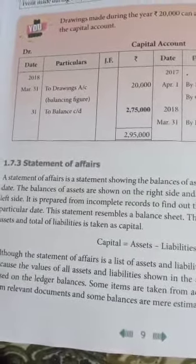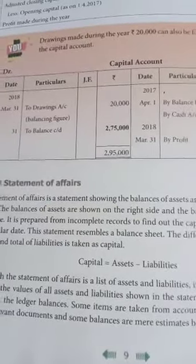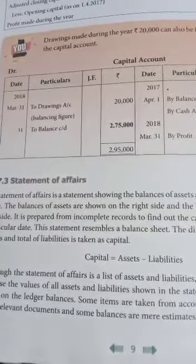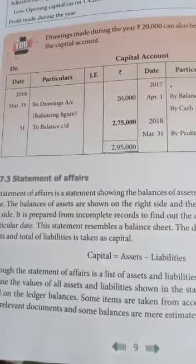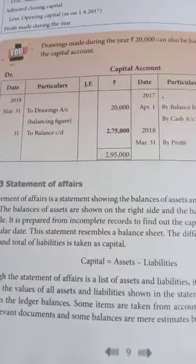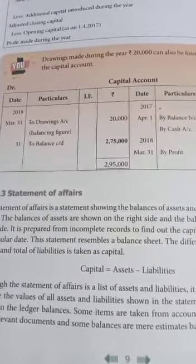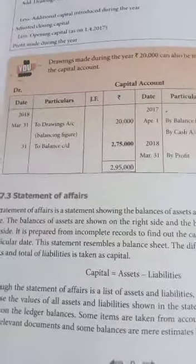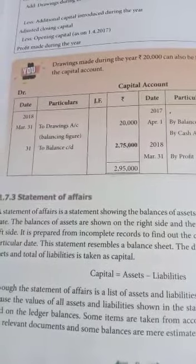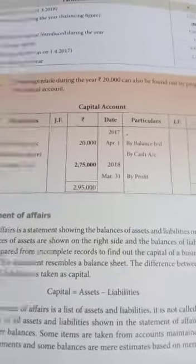Good morning students. Today we are studying the Statement of Profit or Loss accounts from Incomplete Records — that is the Statement of Affairs. The Statement of Affairs is a statement showing balances of assets and liabilities on a particular date. It is prepared from incomplete records to find out the capital of a business.